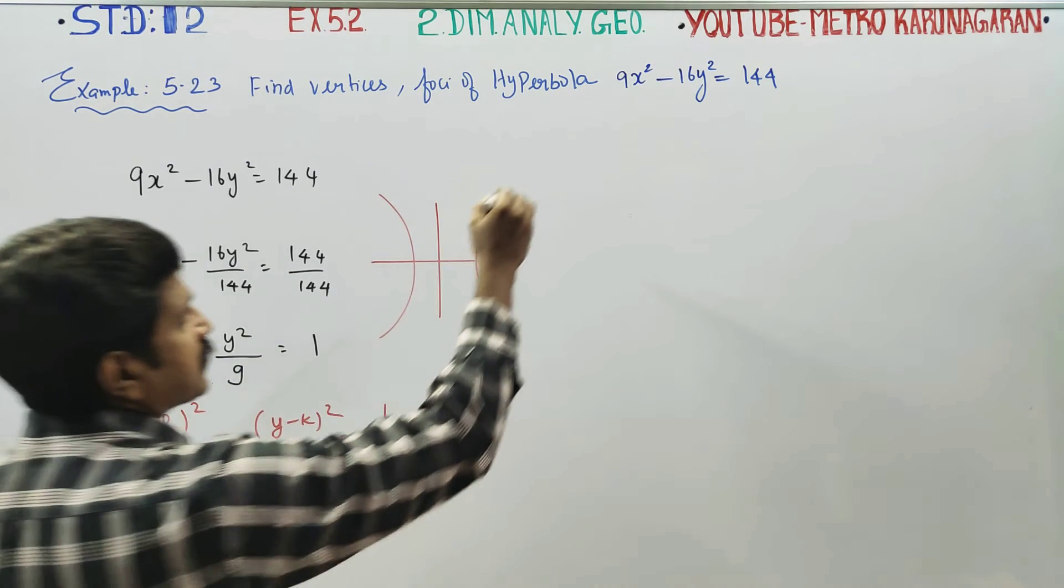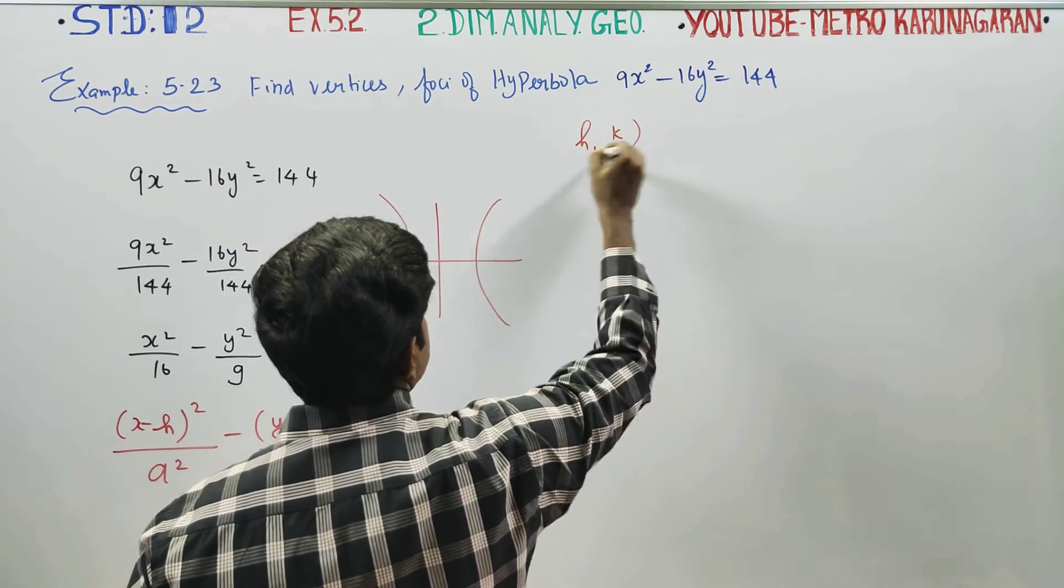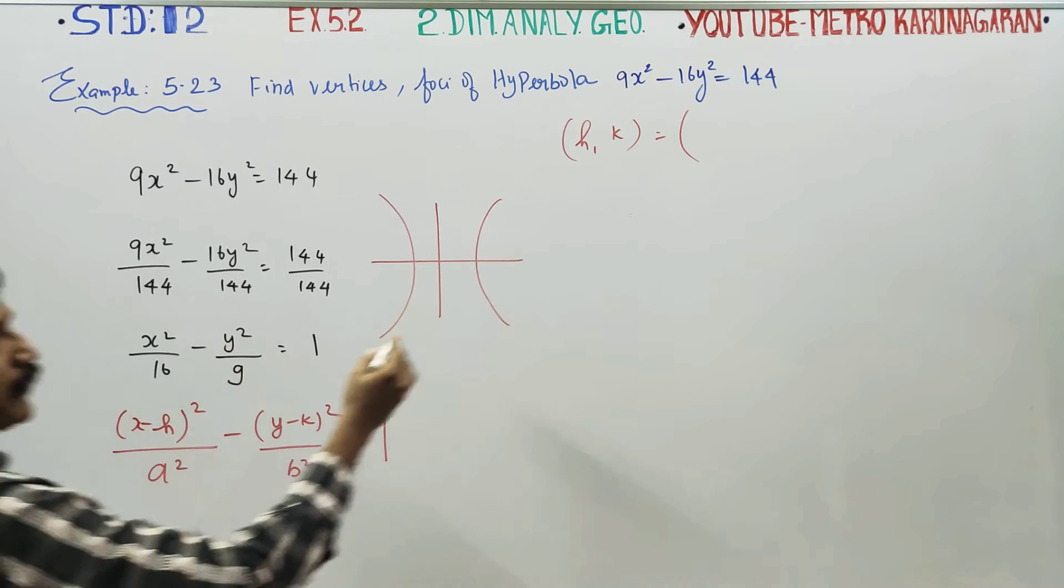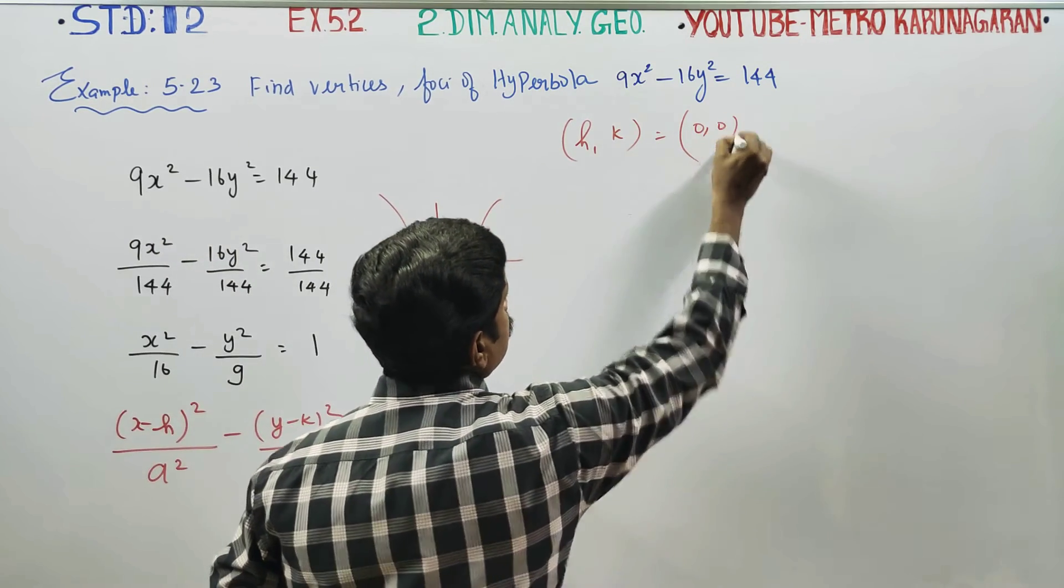We can find the values of h and k. The center (h, k) will be naturally (0, 0).